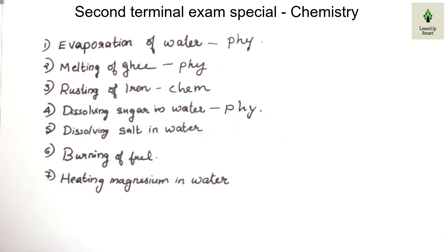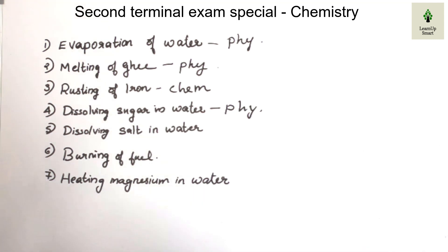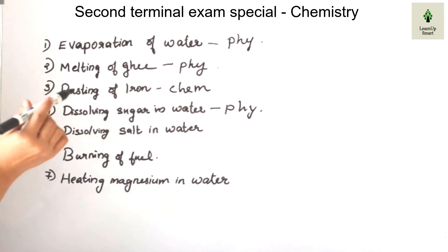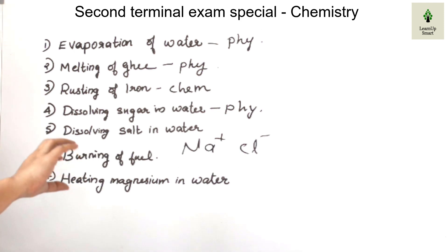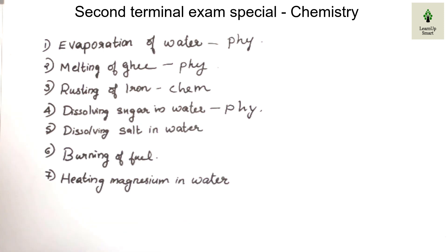This is a topic of exam special video. I am going to tell you how to study this so there is no confusion. We need to identify the physical change of dissolving sugar. If you are dissolving salt in water, NaCl dissociates into Na+ and Cl- ions — ionic dissociation. If you break the molecule into two ions, that is the chemical change of dissolving salt in water.